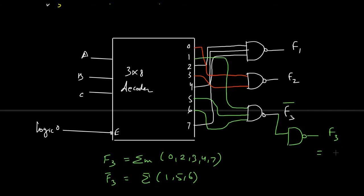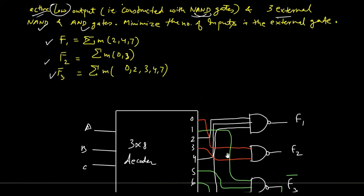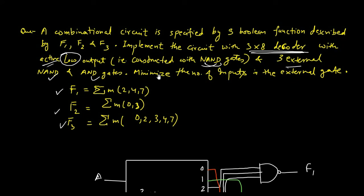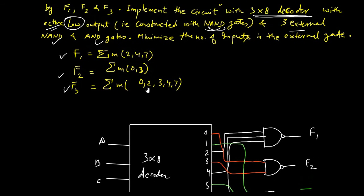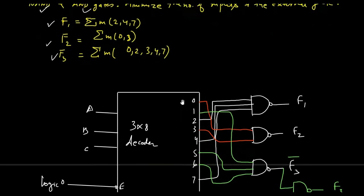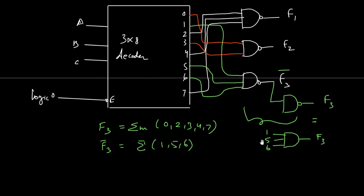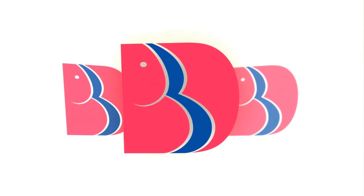After obtaining f3-bar, we add an inverter to get f3. This means the NAND gate with inputs 1, 5, 6 followed by an inverter is equivalent to an AND gate with inputs 1, 5 and 6 giving output f3. By doing this, instead of 5 inputs in the external gate, we reduce it to 3 inputs, which minimizes the number of inputs as required by the question.